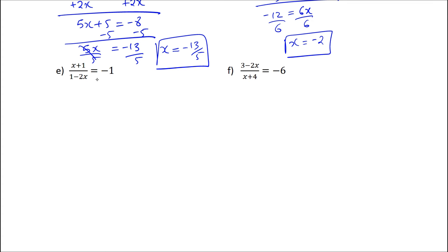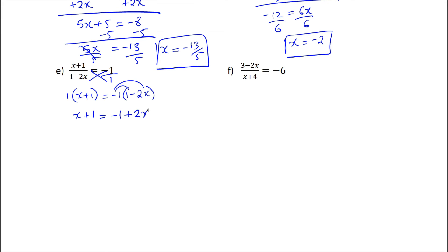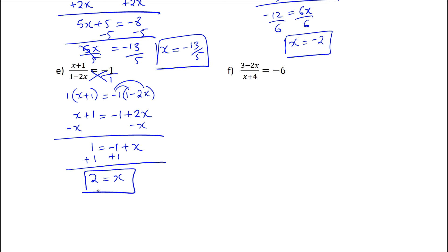The same approach applies to the last two questions. Cross-multiply: 1 into x plus 1 will be equal to negative 1 multiplied by 1 minus 2x. You have to be careful with these negatives, so x plus 1 will be equal to negative 1 plus 2x, since negative multiplied by negative is positive. Get rid of the smaller x — subtract x from both sides — so 1 equals negative 1 plus x. Then add 1 on both sides: 2 equals x. That will be the required solution.